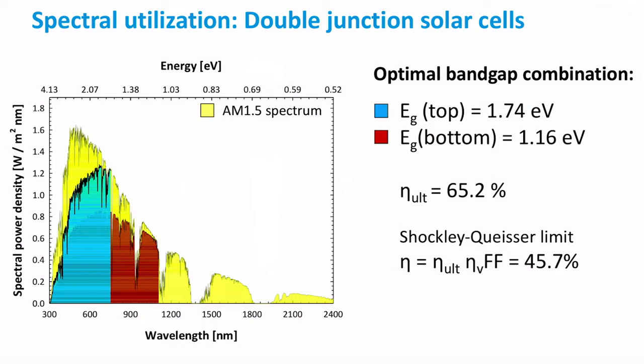Incident light first passes through a high bandgap absorber material. This layer only absorbs high energy photons. Lower energy photons are not absorbed in this layer, because this layer is transparent for them. The low energy photons are then absorbed by the second absorber layer with a lower bandgap. By stacking together two solar cells with absorber layers of different bandgap, we reduce the thermalization loss and the non-absorption. As you can see, the ultimate conversion efficiency increases to 65%.